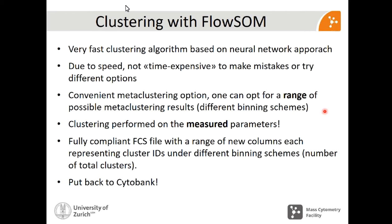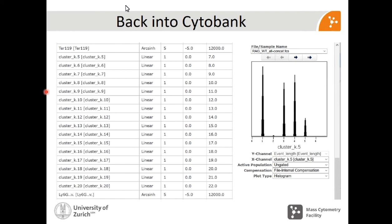The clustering I'll be showing was performed on measured parameters, not on viSNE parameters. What you end up having is a fully-compliant FCS file that has a range of new columns, each one representing a cluster ID under different binning schemes. We take this data and send it back to Cytobank. Back in Cytobank, the platform does a really great job recognizing these new parameters in the FCS file — just because we gave the name 'cluster,' it's going to automatically apply a linear transform and estimate the range. So if you choose this new parameter, your data is going to be partitioned into discrete clusters, and you can now select each individual cluster without ambiguity and explore it further.